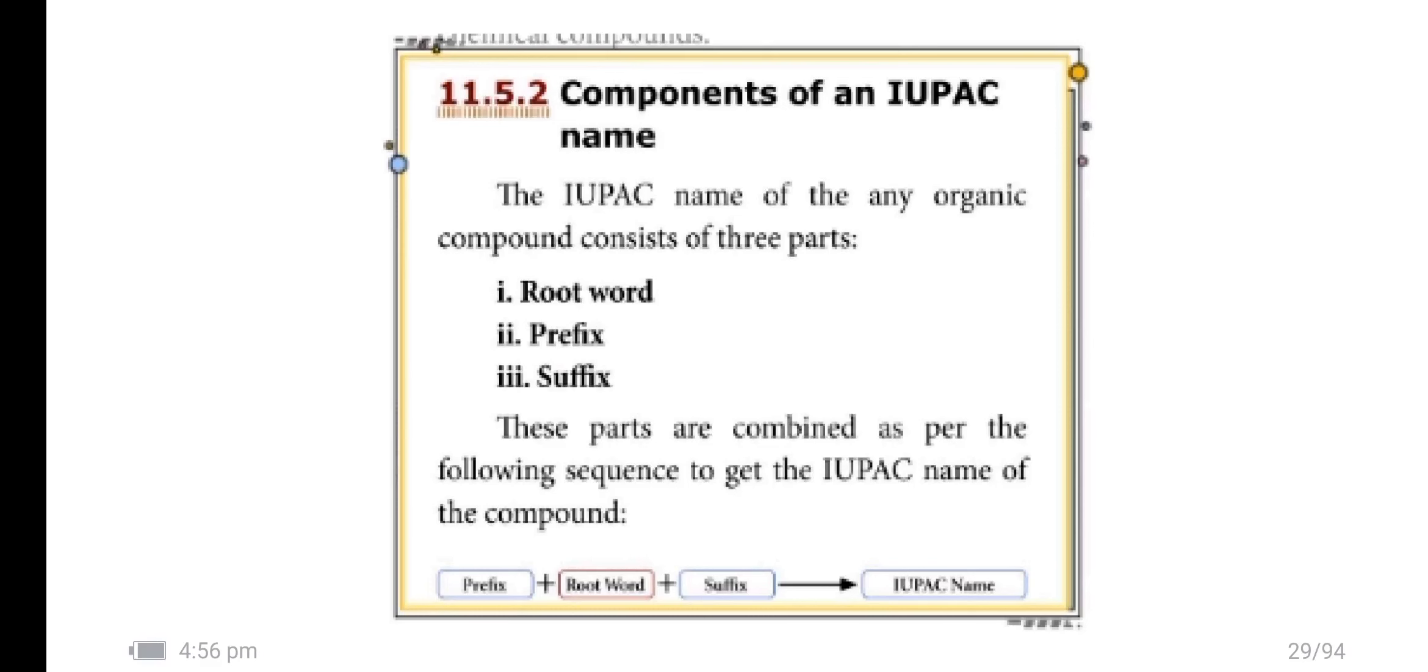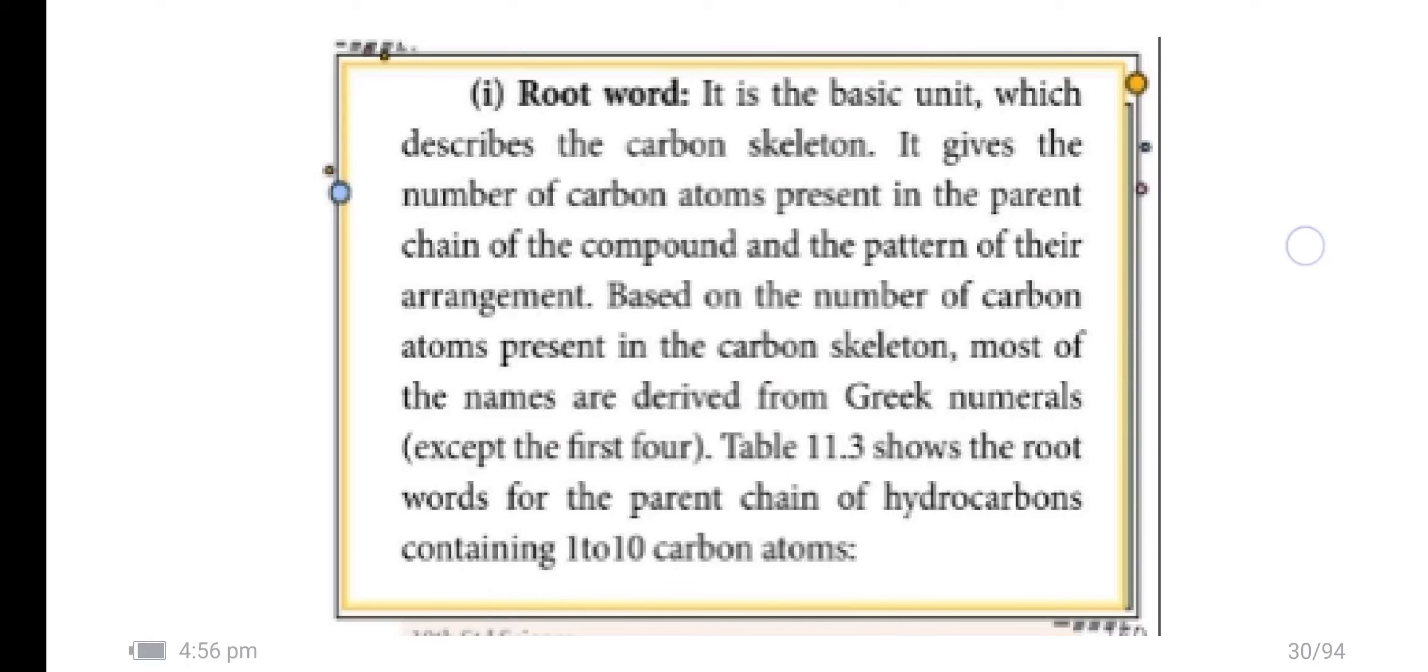Root word: it is the basic unit which describes the carbon skeleton. It gives the number of carbon atoms present in the parent chain of the compound and the pattern of their arrangement. Based on the number of carbon atoms present in the carbon skeleton, most of the names are derived from Greek numerals except the first four. The root word for the parent chain of hydrocarbons containing 1 to 10 carbon atoms.